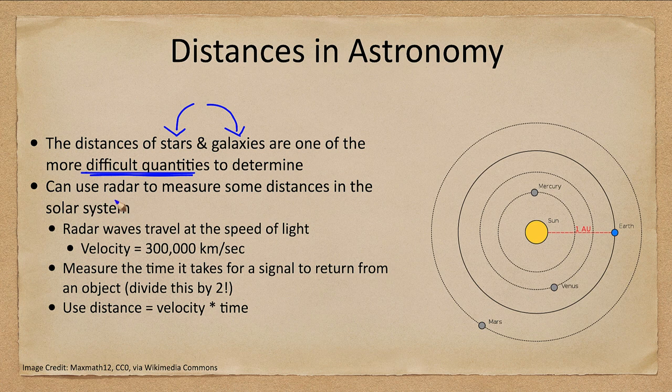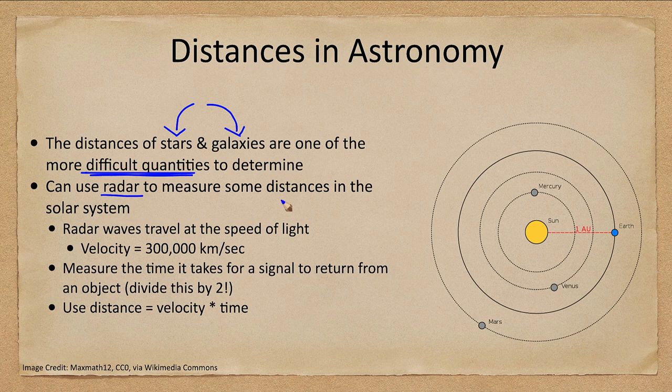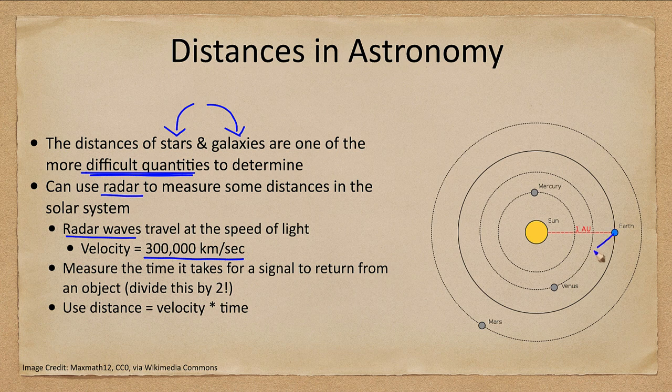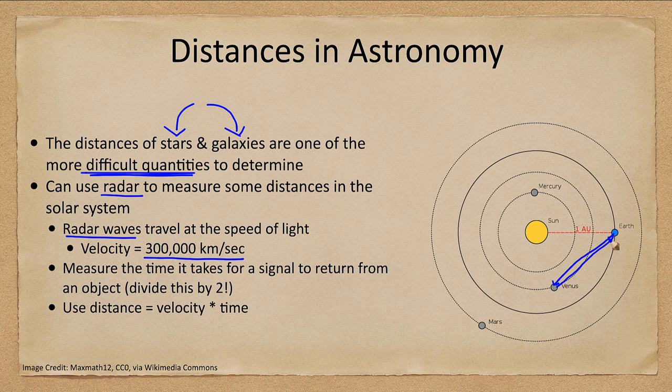Now one method we can use before we get to parallax is radar. This works to measure some distances within the solar system. What we use is the fact that radar waves or radio waves are light, so they travel at the speed of light or 300,000 kilometers per second. If, for example, we send radar waves to Venus and bounce them off and measure the time it takes for the return signal, then we can determine the distance.